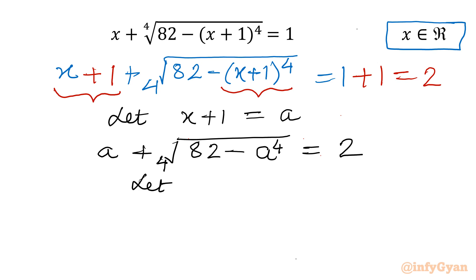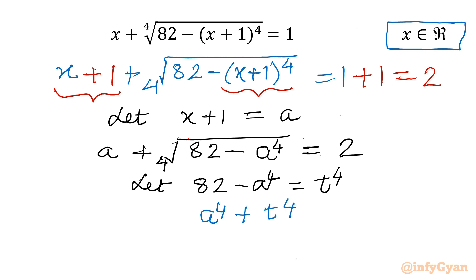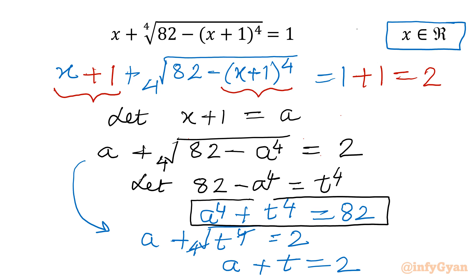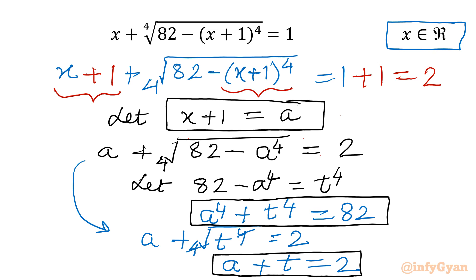Our equation becomes A plus the 4th root of (82 minus A^4) equal to 2. Now I will let 82 minus A^4 equal to T^4. From this we get A^4 plus T^4 equal to 82. The equation then becomes A plus the 4th root of T^4 equal to 2, and since the 4th root and power 4 cancel, we get A plus T equal to 2. Once A is known, x is known from x+1=A.